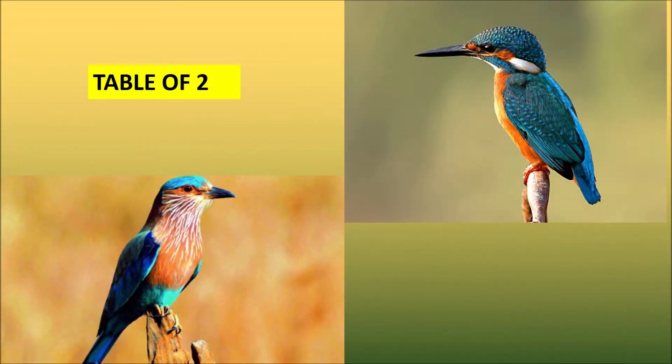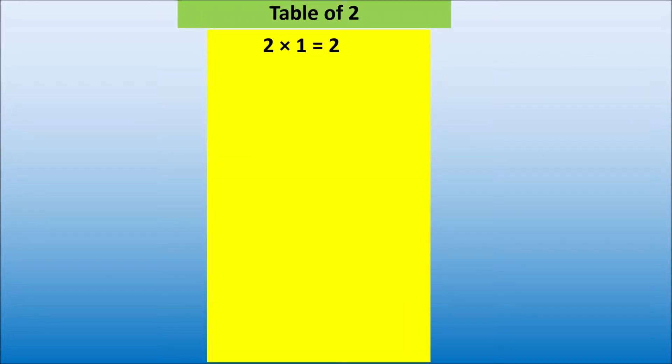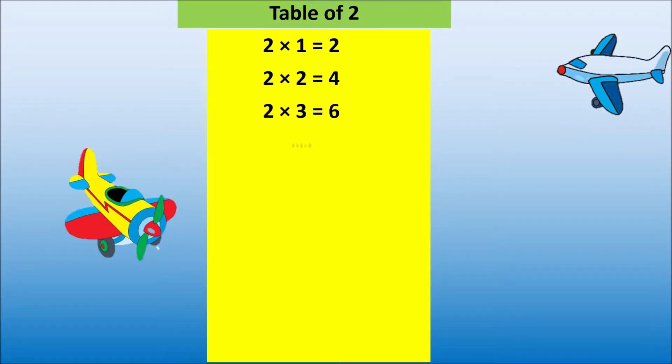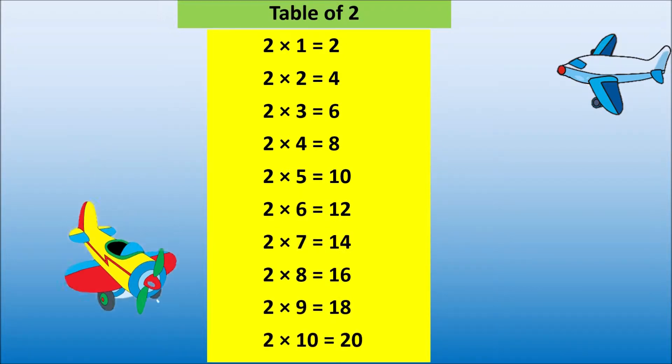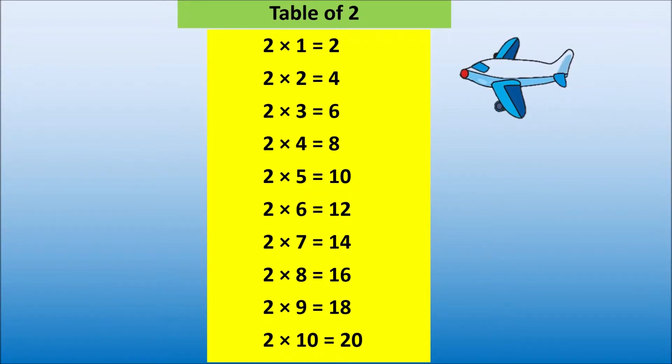Let us begin with the table of 2. 2 1s are 2, 2 2s are 4, 2 3s are 6, 2 4s are 8, 2 5s are 10, 2 6s are 12, 2 7s are 14, 2 8s are 16, 2 9s are 18, 2 10s are 20.